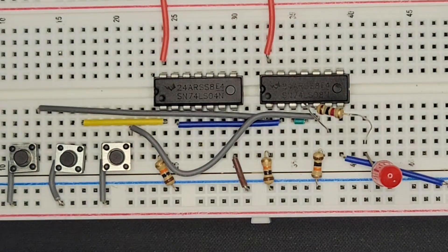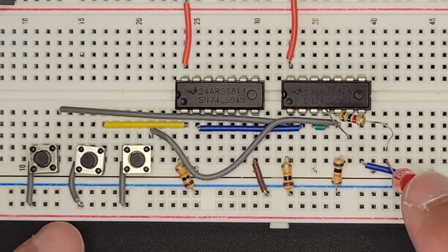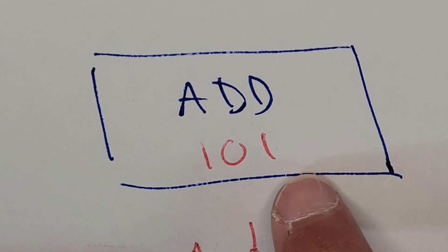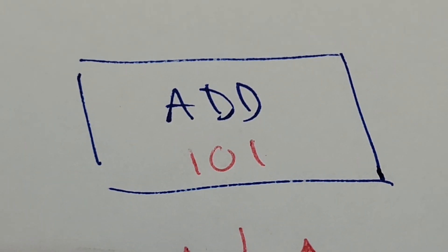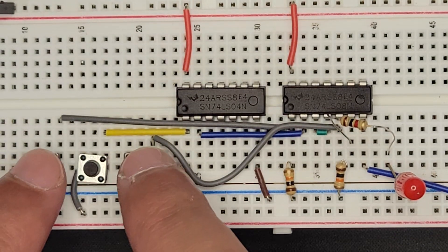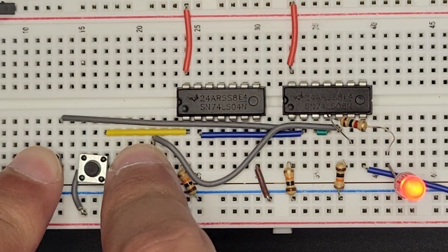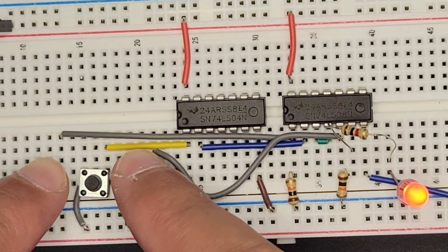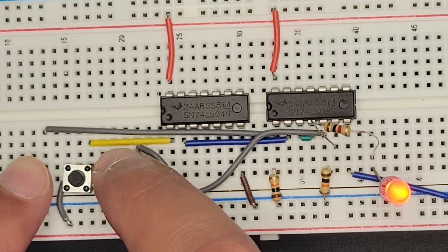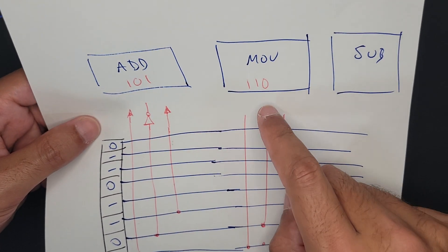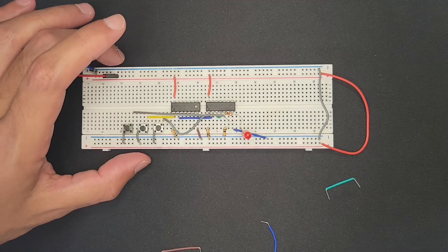Let's plug in power. For our ADD circuit — if the processor receives 101 in the instruction register it performs ADD — we input 101 and it does activate. Any other combination does not activate. This works perfectly. We could call this an instruction decoder. For every operation, in this case ADD with opcode 101, this circuit fires. We can do the same for MOVE at 110 and others.